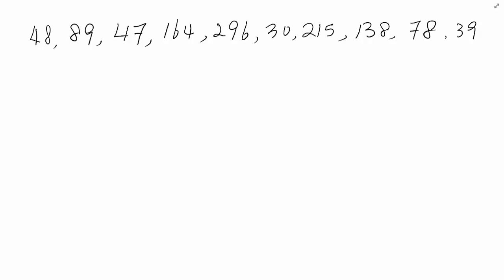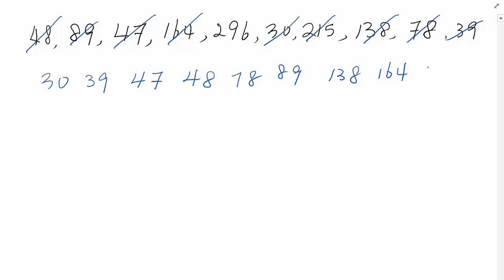First step: you need to reorganize this data in ascending order. As you see, 30 is the minimum, so write 30 here. Then 39 and 47 and 48 and 78 and 89 and 138 and 164 and 215 and 296.